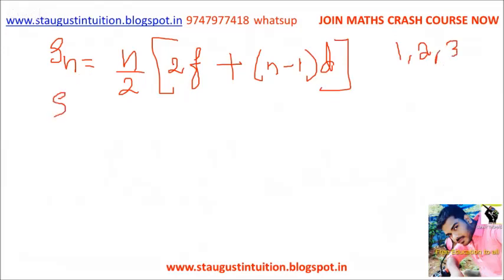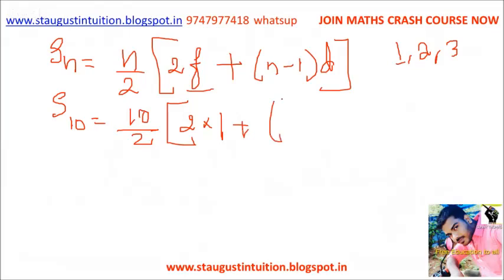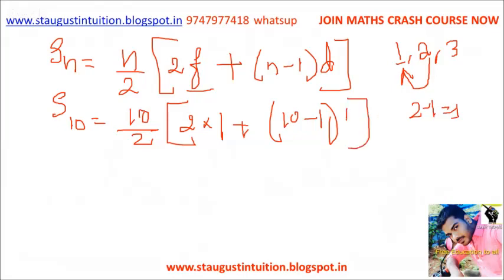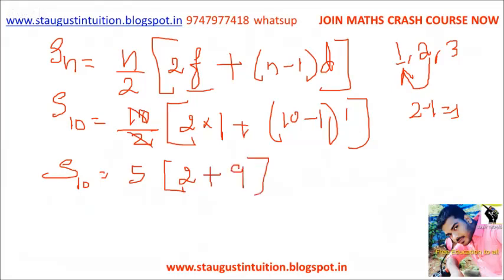Sn is equal to 10. f means first term, which equals 1. So we have 1 plus n minus 1, which is 10 minus 1. D is equal to 1. So 1 plus 9. This is equal to 5 into 2, giving us the same answer.